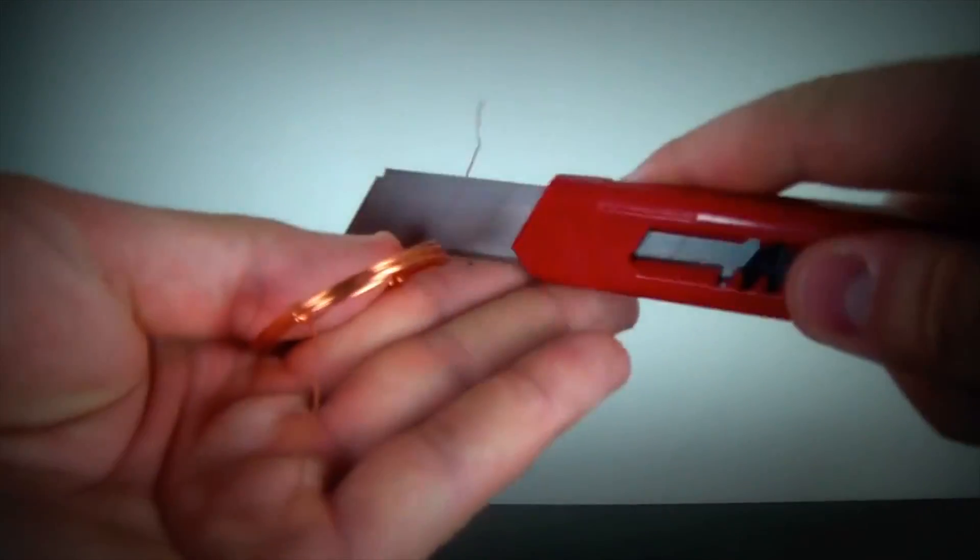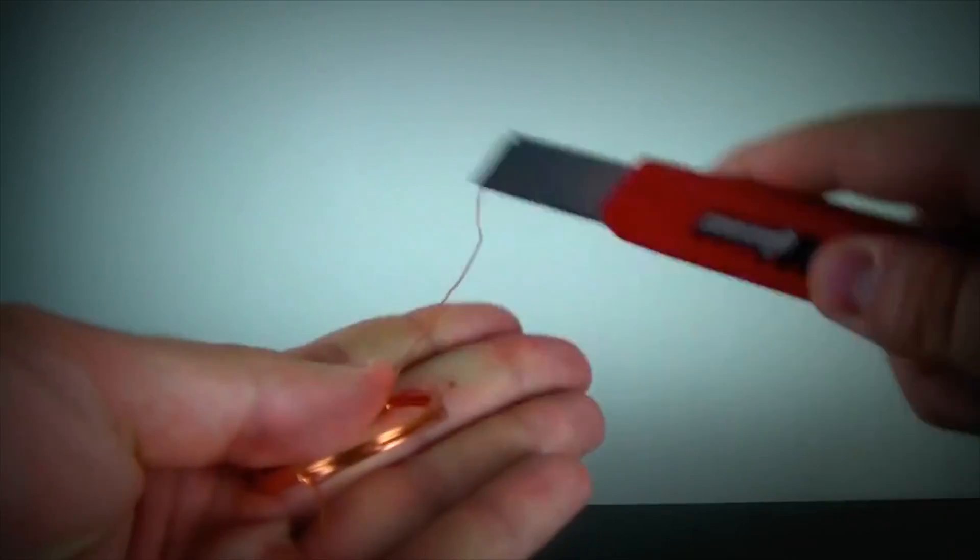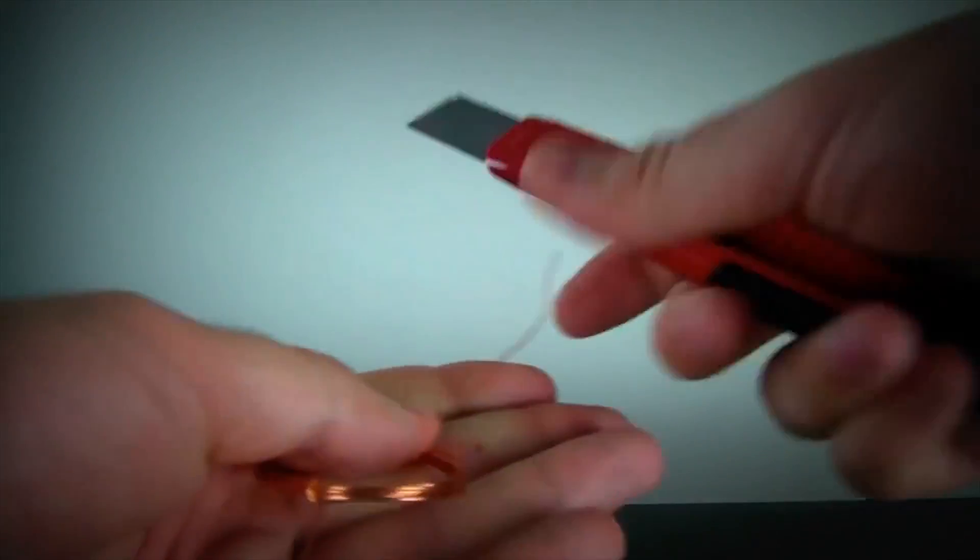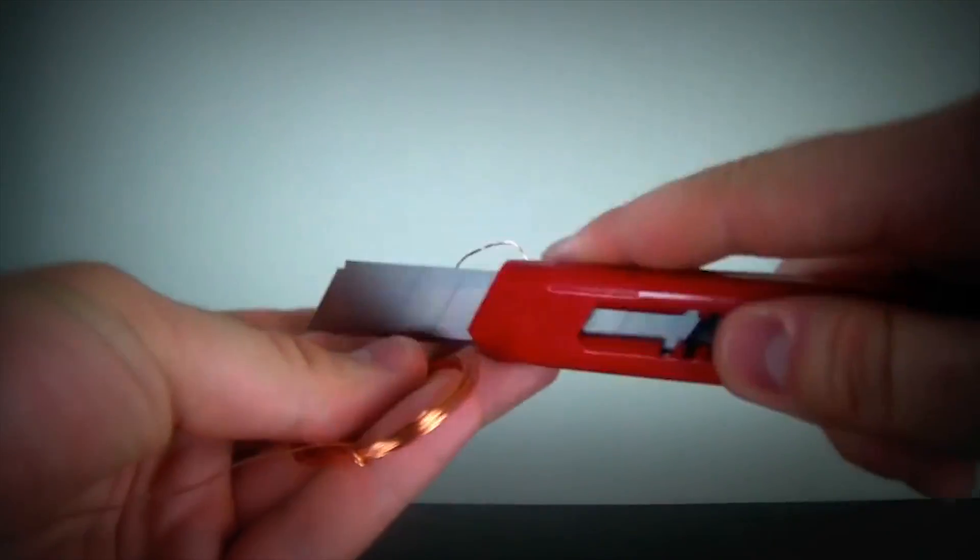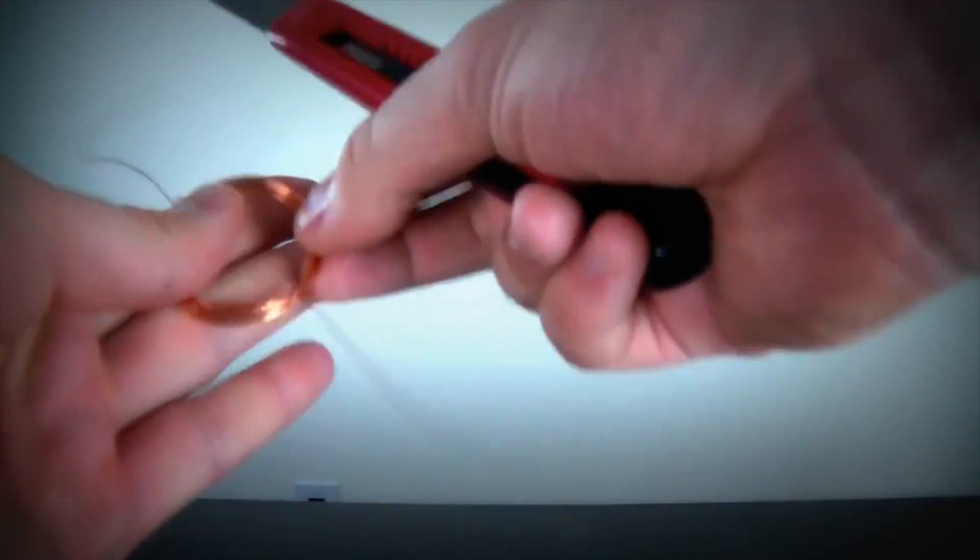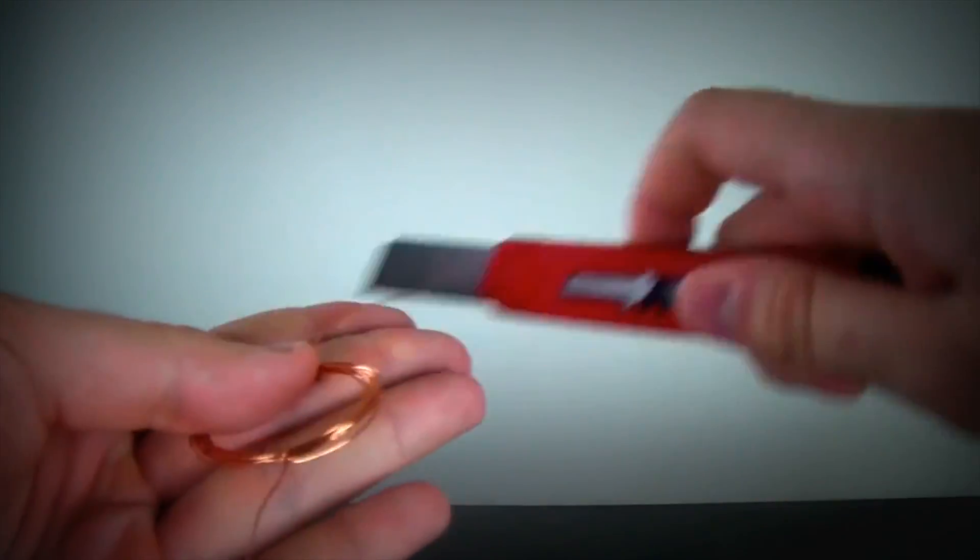Grab your knife and take the isolations off. Do not cut yourself. So, once you took your isolation off on one side, do it on the other side.